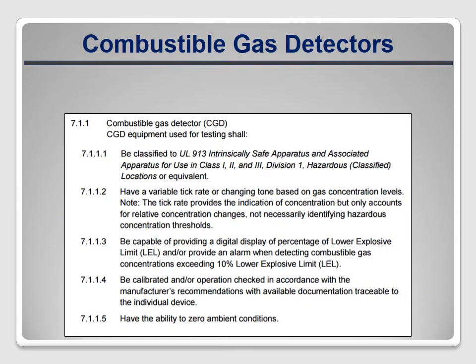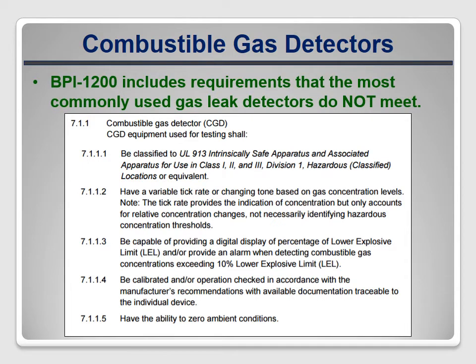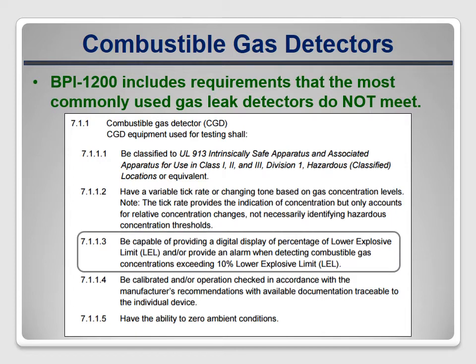The BPI 1200 standard includes requirements for gas leak detectors that the most commonly used models in the field don't meet. It requires that these instruments now be able to measure ambient gas levels in units of percentage of the lower explosive limit. As of early 2017, the least expensive model available that meets these requirements costs around $400, which could be an expensive change for programs and participating contractors.